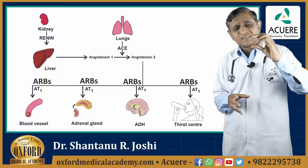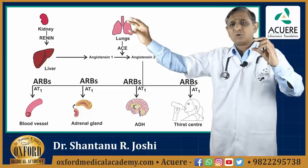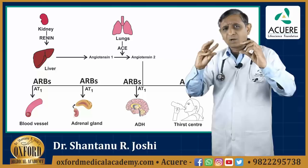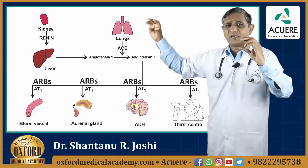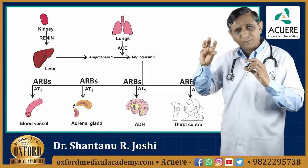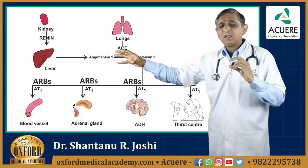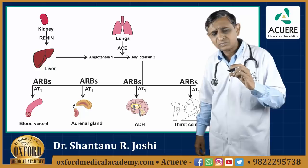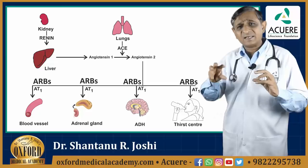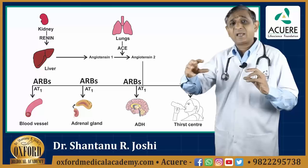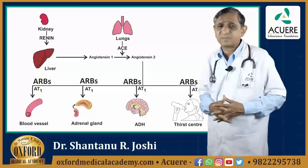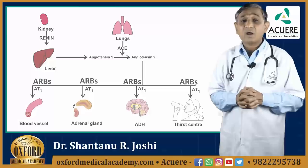To summarize: angiotensin-2 acts on peripheral blood vessels to raise systolic blood pressure; acts on the adrenal cortex to secrete aldosterone, increasing sodium and water retention; acts on the posterior pituitary to increase ADH secretion and retain sodium and water, raising blood volume and systolic blood pressure; and acts on the thirst center in the brain, increasing thirst sensation so the individual takes more water, again raising blood volume, cardiac output, and ultimately systolic blood pressure.